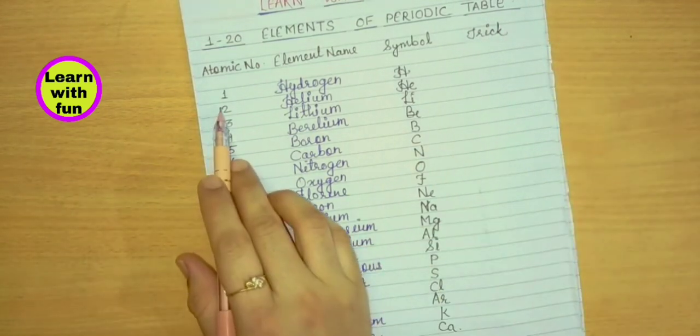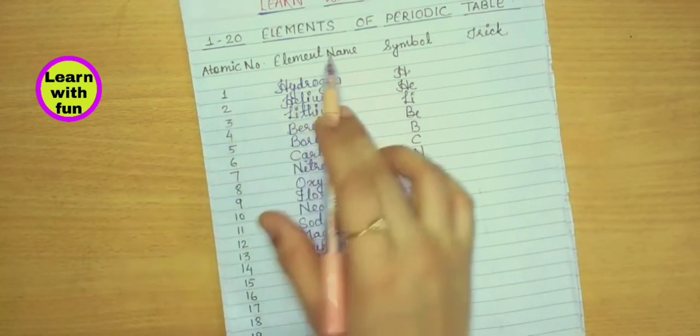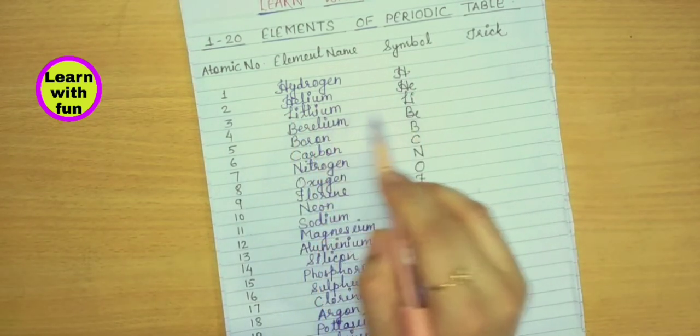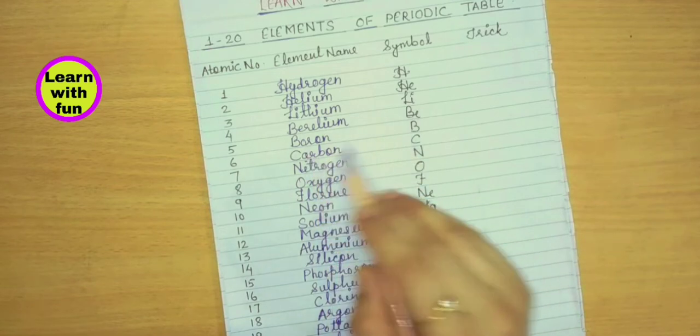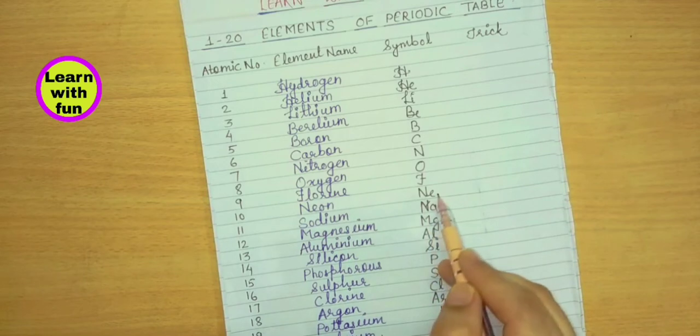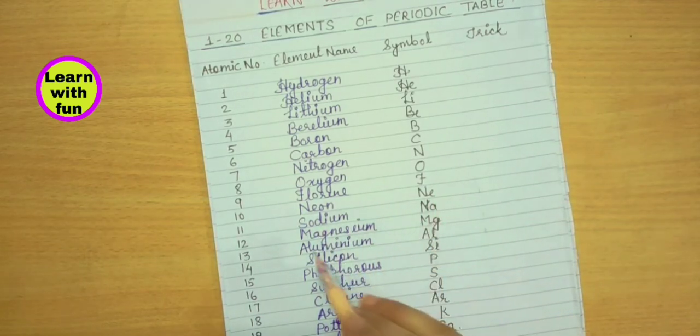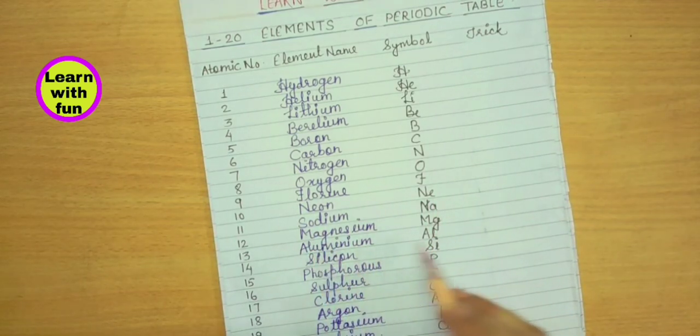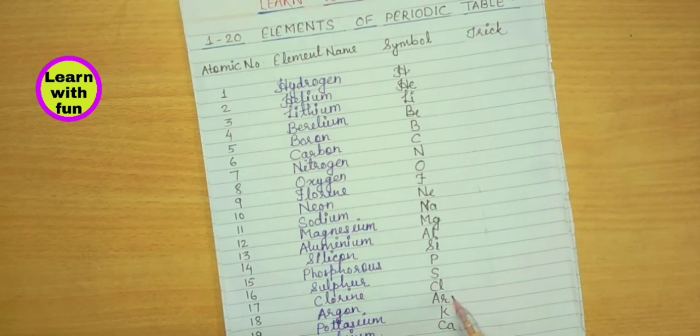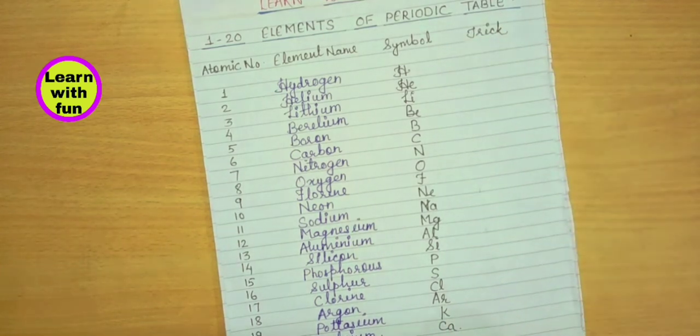Atomic number 1: element name Hydrogen, symbol H. Helium He, Lithium Li, Beryllium Be, Boron B, Carbon C, Nitrogen N, Oxygen O, Fluorine F, Neon Ne, Sodium Na, Magnesium Mg, Aluminium Al, Silicon Si, Phosphorus P, Sulfur S, Chlorine Cl, Argon Ar, Potassium K, and Calcium Ca. So here are the symbols, let's write the trick for it.